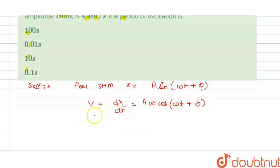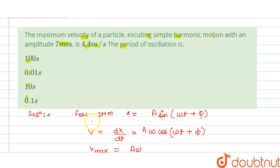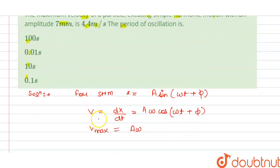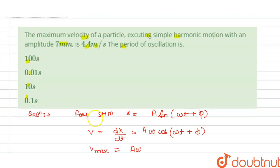And we know that v maximum velocity is maximum when we have the amplitude multiplied with omega, that is angular velocity. And we have the amplitude is 7 mm and velocity maximum is 4.4, so we have to find the period of oscillation.